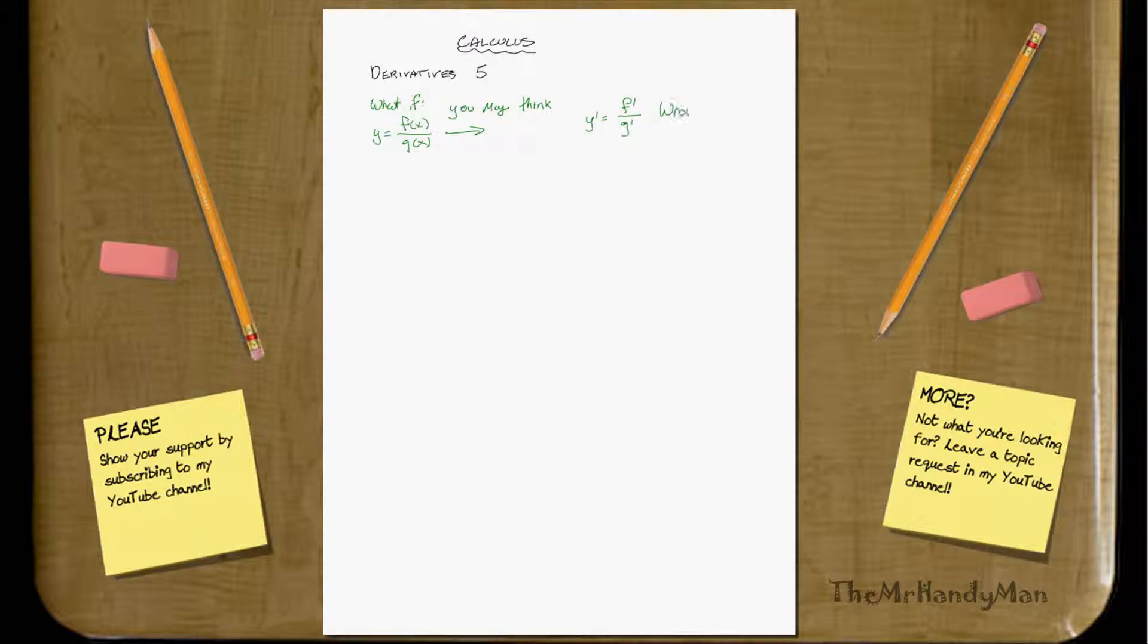And I'm sorry to say that's wrong. There's no way around it. I'll show you that later on, but it's wrong, just like in the product rule. Y prime does not, does not by any means, equal f prime over g prime.